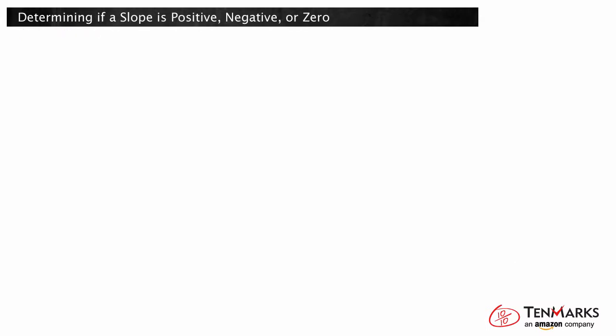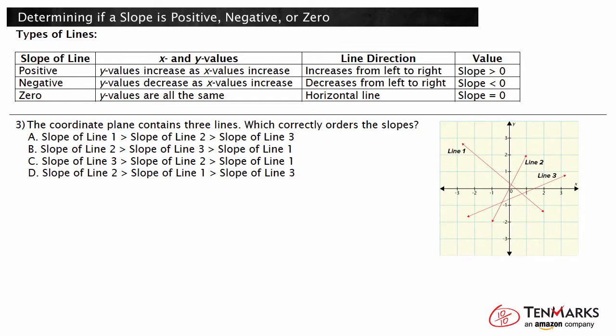Let's practice determining another set of slopes. The coordinate plane contains three lines — which correctly orders the slopes? We will first determine what type of slope each line has. We can see that none of the lines are horizontal, so none have a slope of zero. Line 1 decreases as it goes from left to right, so this slope is negative. Both lines 2 and 3 increase as they go from left to right, so they are both positive. We know that line 1 has a negative slope and will be less than zero — this will be our smallest number. We can eliminate choices A and D because they do not have line 1 as the smallest number.